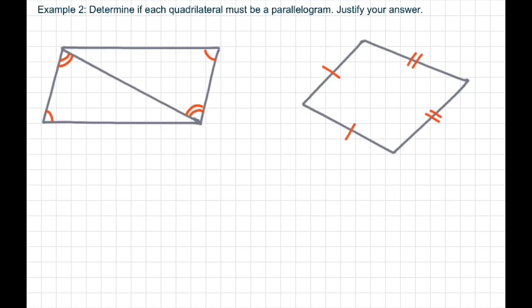This next example says determine if each quadrilateral must be a parallelogram, and I have to justify my answer. When I look at the first one, it is a parallelogram because the diagonal forms two triangles out of the parallelogram and their angles correspond. This angle corresponds to this angle — these are opposite angles of the parallelogram — and this angle corresponds to this one. So this fulfills the rule that says both pairs of opposite angles are congruent. This one checks out.